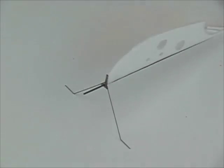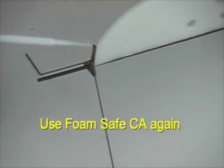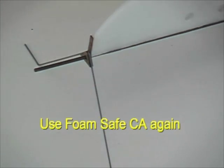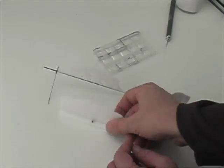Once it fits nice, make it line up and apply some foam safe CA to adhere it onto both the carbon rod and the foam fuselage.